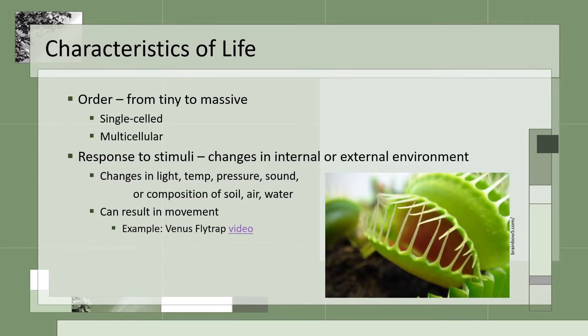When we consider order, organisms on earth range from simple, one-celled bacterium that may only live a few hours, to enormous complex organisms that live for hundreds of years, like trees or turtles. Living organisms are also sensitive to a stimulus. Plants are known to grow toward a light source, birds will fly away at a sudden sound, and snakes will move into the sun to warm up.